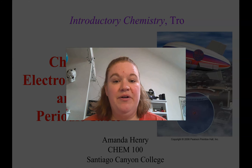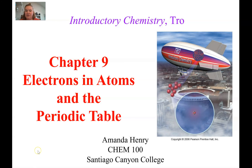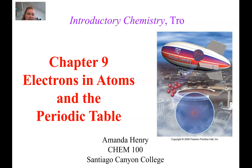Hello, this video is going to cover chapter 9 for our introductory chemistry class. Chapter 9 is called Electrons in Atoms and the Periodic Table. We're going to focus most of the time on that first half of the name, the electrons in atoms. We're going to talk about electron configurations. And then the second portion of the chapter, we're going to talk about trends within the periodic table.